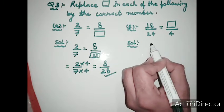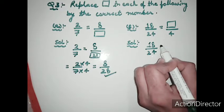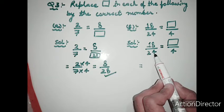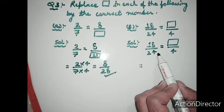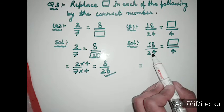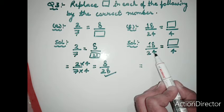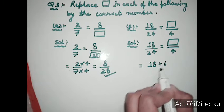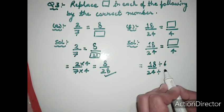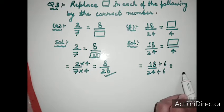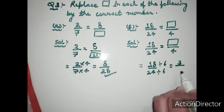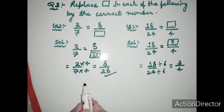Next: 18 upon 24 equals blank upon 4. We need to find what number divides 24 to give 4. Twenty-four divided by 4 is 6, so we divide both numerator and denominator by 6. Eighteen divided by 6 is 3, and 24 divided by 6 is 4, giving 3 upon 4. So we write 3 in the blank box. Students will solve parts b, c, and d by themselves.